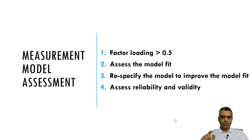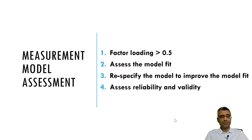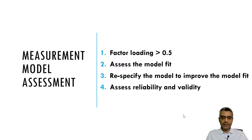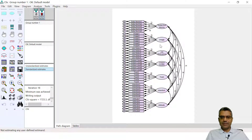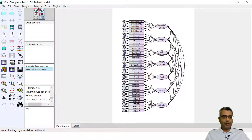These are the four things we need to address in CFA. Factor loadings — we need to check to make sure all factor loadings are greater than 0.5, and we prefer greater than 0.7, but 0.5 is okay too. Then we need to assess the model fit and improve it by re-specifying the model, and then we assess the reliability and validity of the measurements. This is our CFA model developed following our research model.